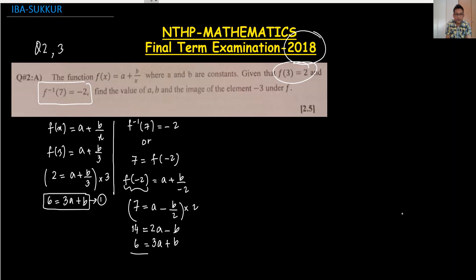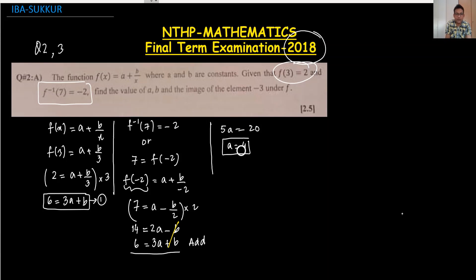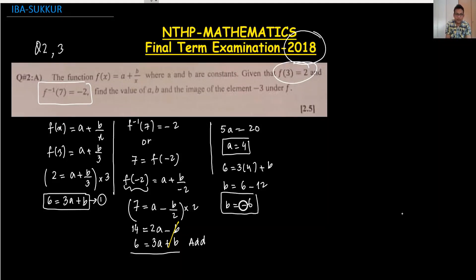Adding the two equations, b cancels out. We get 5a = 20, so a = 4. Substituting a = 4 back into equation 1: 6 = 3(4) + b, so b = 6 - 12, giving b = -6. This is how we found the values of a and b.